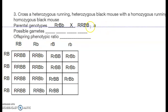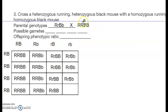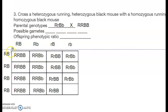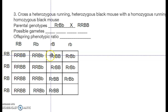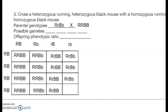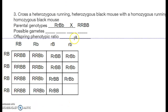For the homozygous parent (big R big R, big B big B), all gametes are big R big B. When we fill in the Punnett square we get big R big R big B big B, big R big R big B little b, big R little R big B little b, and so on down to big R little R big B little b.